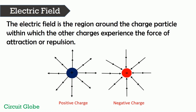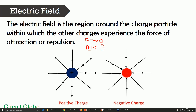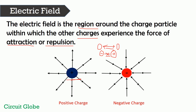The electric field is the region around a charged particle within which other charges experience the force of attraction or repulsion. Consider that we have two unit positive charges — when these two charges are placed near each other, the force of repulsion occurs between them. Similarly, for two dissimilar charges, when placed near each other, the force of attraction occurs between them.